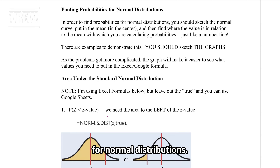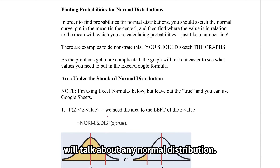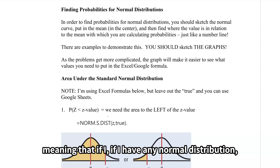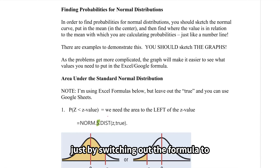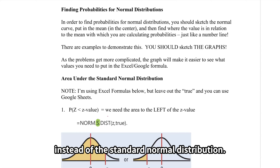Let's now look at finding probabilities for normal distributions. We're going to start out with just standard normals, and then in another video we'll talk about any normal distribution. The principles are the same — if I have any normal distribution, I can use the same procedure, just by switching out the formula to any normal distribution instead of the standard normal distribution.